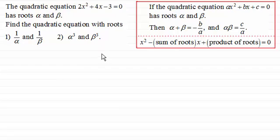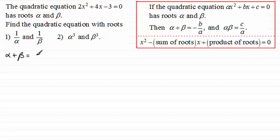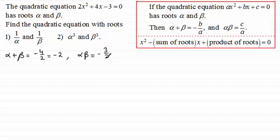First we need to work out our values for alpha plus beta and alpha beta. The sum of the roots alpha plus beta equals minus b over a. Since b is 4 and a is 2, that gives minus 4 over 2, which is minus 2. For the product of the roots, alpha beta equals c over a, so it's minus 3 over 2.